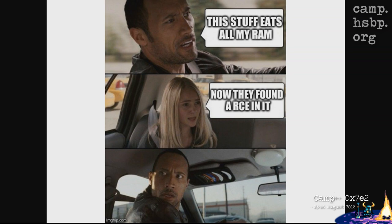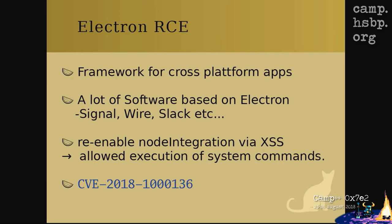It's Electron — a framework for cross-platform apps. It's essentially a modified Chrome browser that loads your website and features. It's easy to use, supports many platforms, and fast to implement. Many apps are based on Electron: Signal, Wire, Slack, etc. There was one exploit where you could re-enable Node.js integration via XSS — cross-site scripting — which allowed execution of system commands. Essentially every Electron-based app was potentially able to execute system commands on your PC.